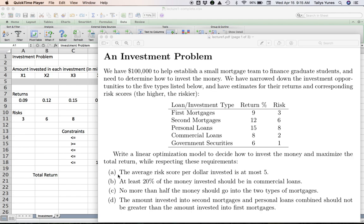First one says the average risk score per dollar invested is at most five. So this is going to work like a weighted average type of constraint. When you put money in the first investment, that money comes in with a risk level three, the more money you put in there, the more weight you're giving to this number three here. So overall, on average, considering the amounts that go into each investment and their respective risks, when you take that average, you don't want the risk per dollar to be more than five. Then at least 20% of the money into the commercial loans, no more than half into the two types of mortgages, first and second, and the amount invested into second and personal loans combined should not exceed the amount invested into first mortgages.